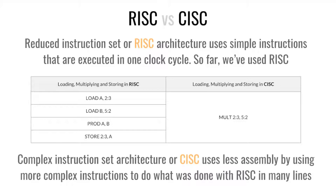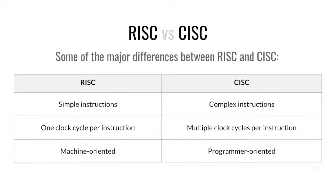Now that we've seen some actual instructions, it's easier to understand the difference between RISC and CISC architecture. So far we've been using RISC — a simple instruction like add or move done per clock cycle, one instruction per clock cycle. In a CISC (complex) architecture you can do four or five things with one simple word like MULT. The major differences: RISC uses simple instructions while CISC uses more complex ones. Because of that, CISC is programmer-oriented while RISC is machine-oriented, and the biggest difference is that RISC is one clock cycle per instruction while CISC could be multiple clock cycles per instruction.